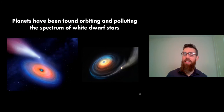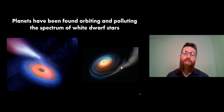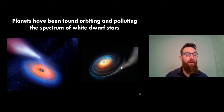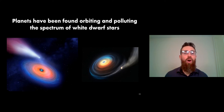Interestingly, planets have been found orbiting and also polluting the spectra of white dwarf stars. If planets are orbiting them - even if being destroyed - it means they survived the planetary nebula and red giant phases to still orbit the white dwarf, which is quite interesting and exciting because it has implications for our own solar system going forward.